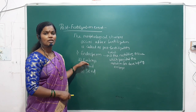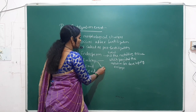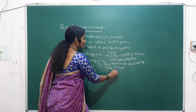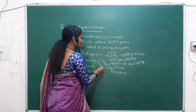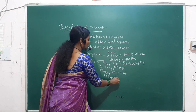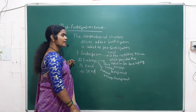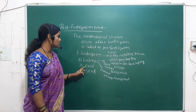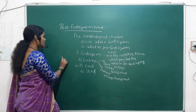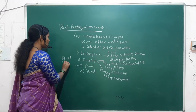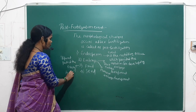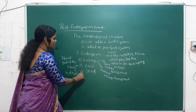After endosperm, we will see embryo development — two types: dicot embryo development and monocot embryo development. This embryo development is the second stage of the post-fertilization event. The third stage is fruit, defined as the ripened or fertilized part of the ovary.